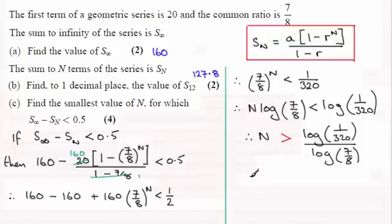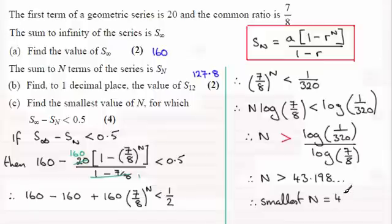So having done that, using your calculator you should find that n turns out to be greater than 43.198 and so on. We're being asked for the smallest value of n for which this is true, and the smallest value of n, knowing that n's got to be an integer, has to be 44. So the smallest n equals 44.